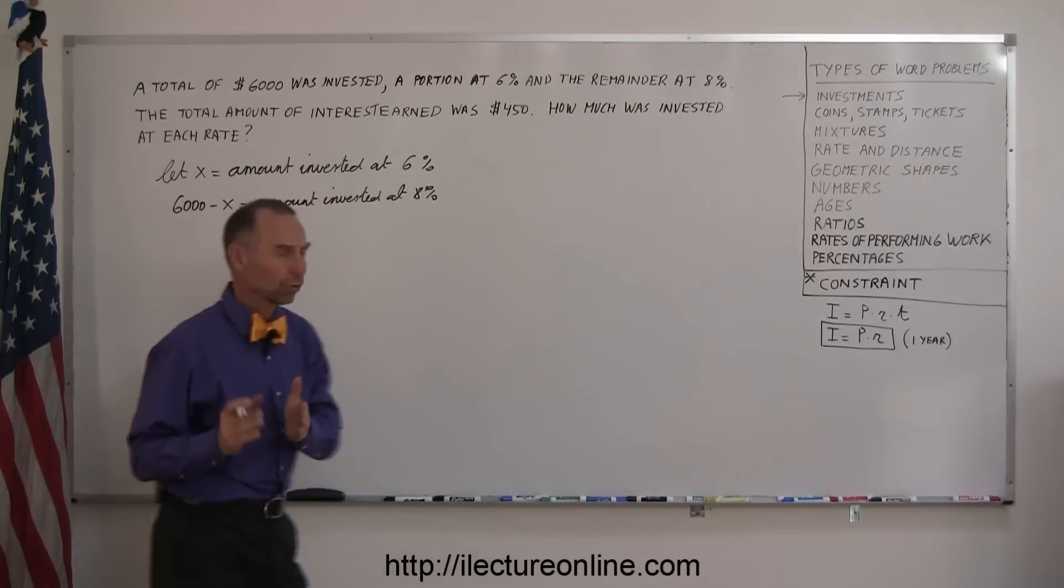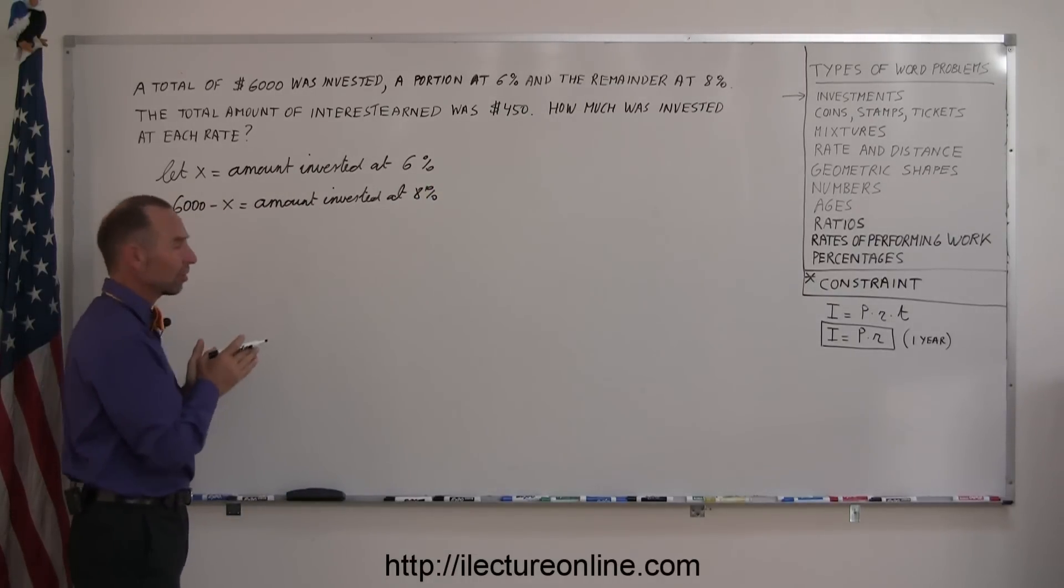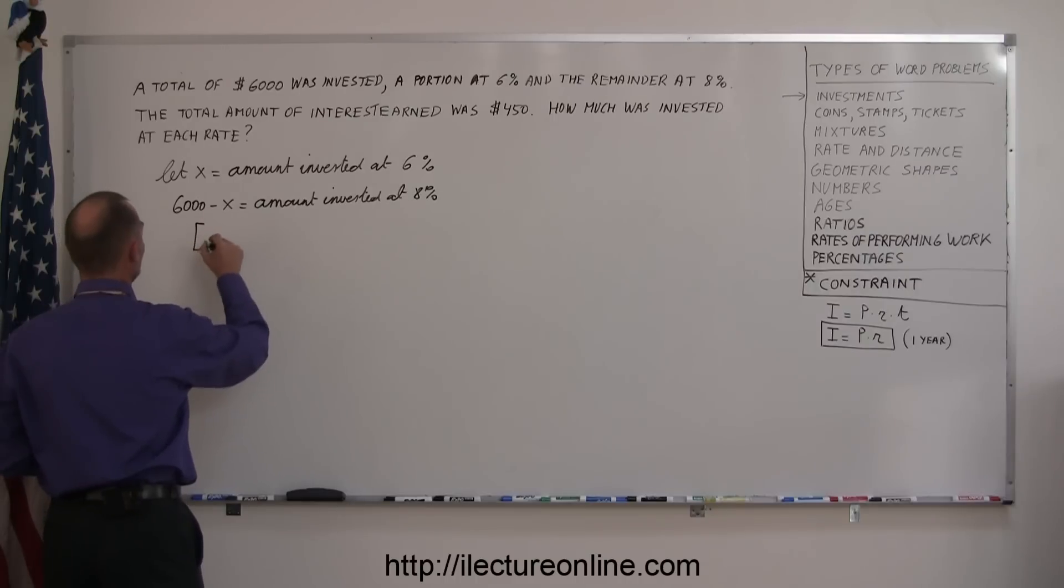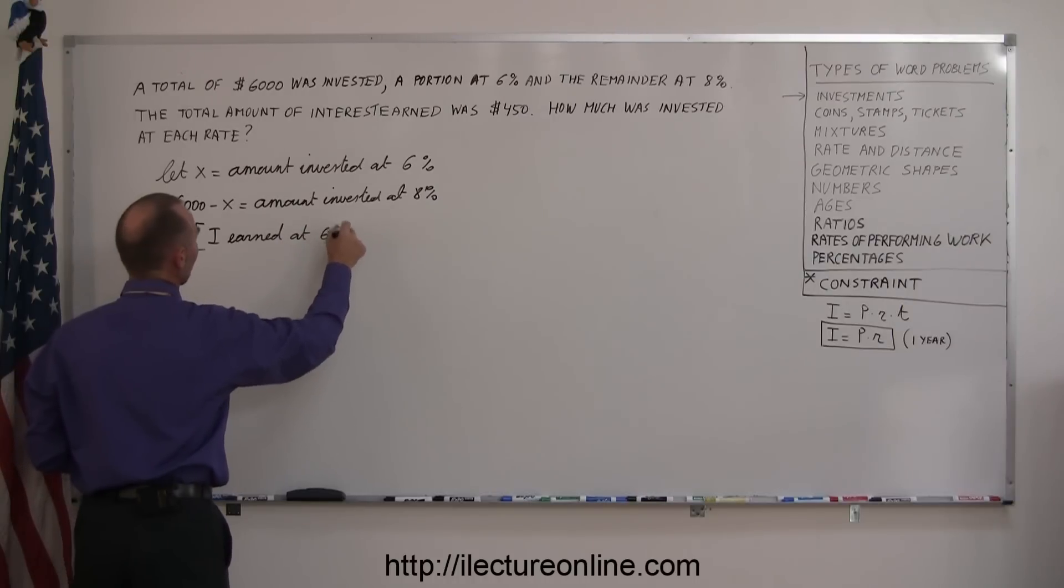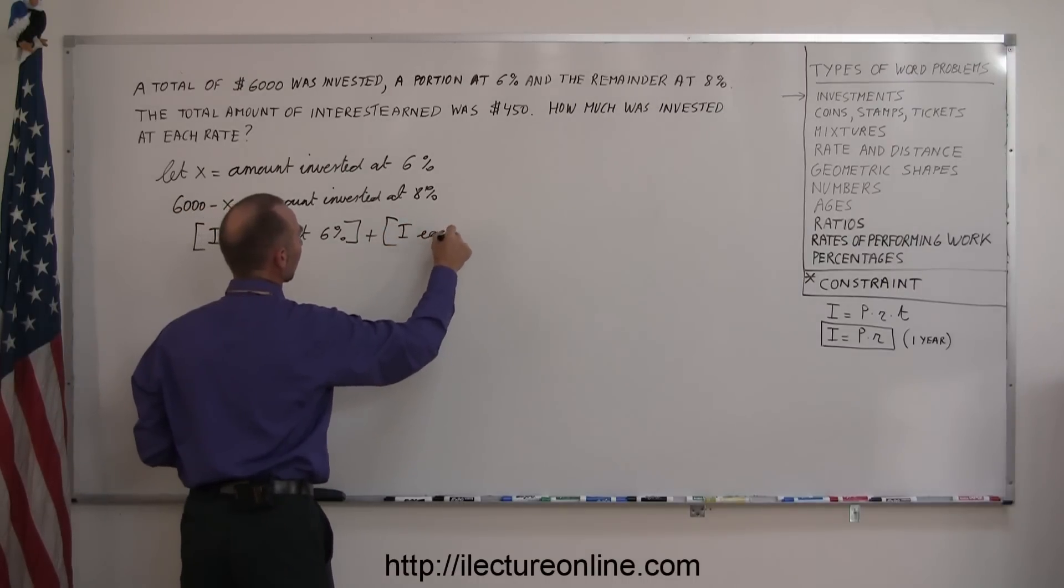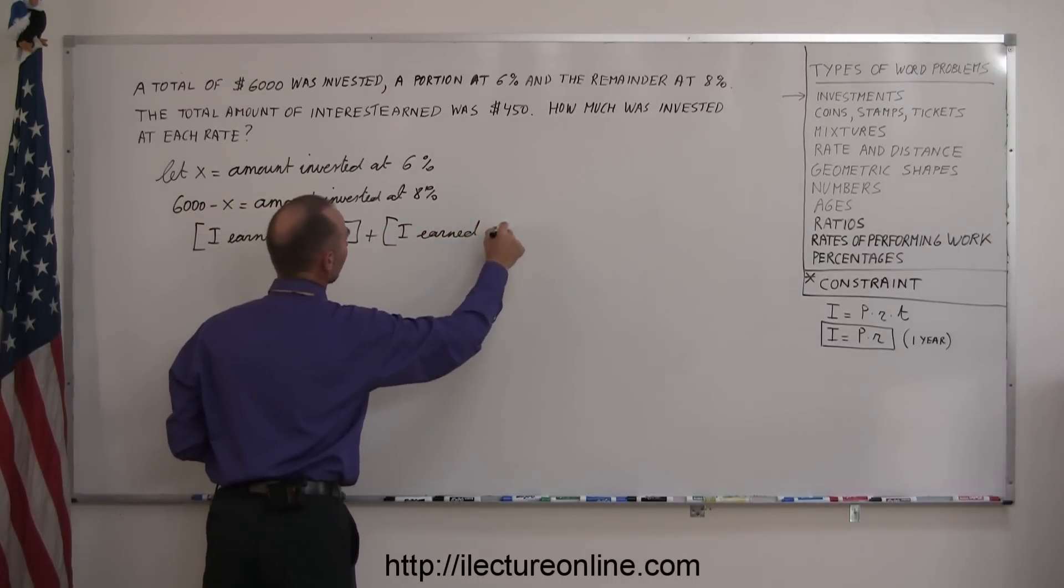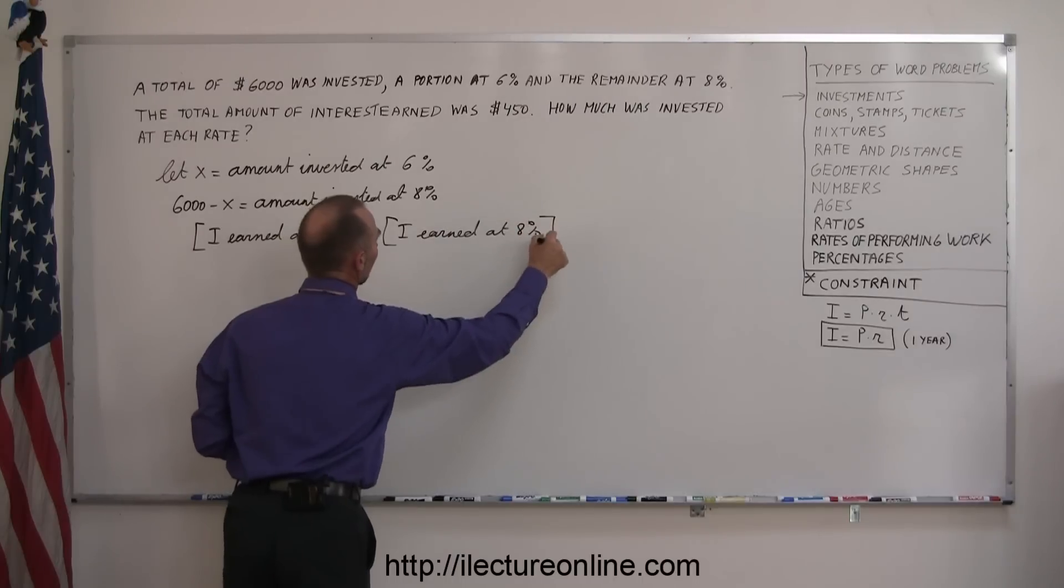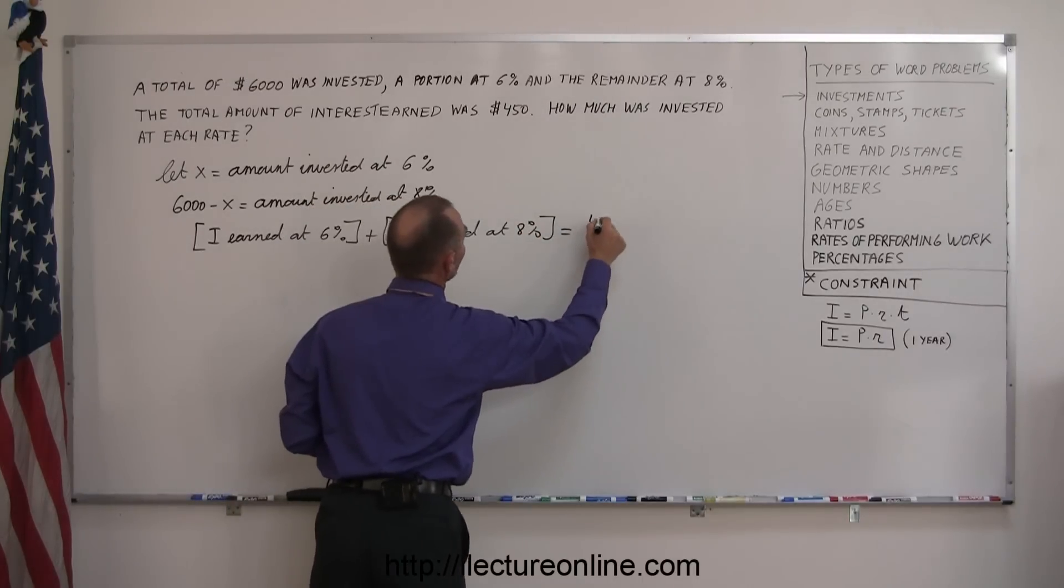Now, they tell us that we earned a total of $450. So, the interest earned with my investment at 6%, and the interest earned with the amount invested at 8% should add up to $450. So, interest earned at 6% plus interest earned at 8% should add up to the total of $450.